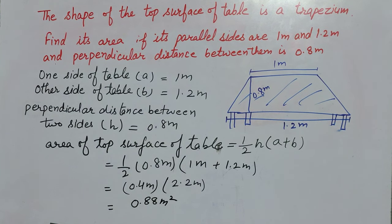So the area of the top surface of the table is 0.88 meters square. Thanks for watching — like, comment, and share my video, and subscribe to my channel. Thank you.